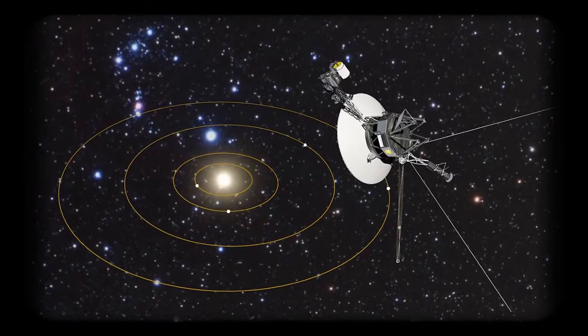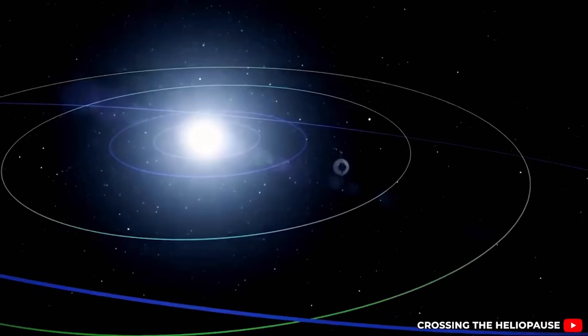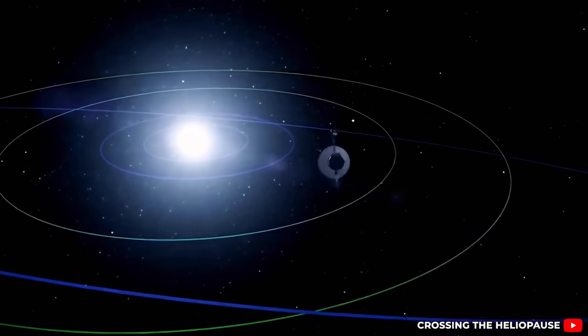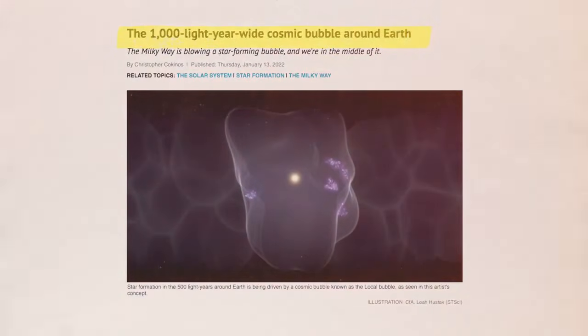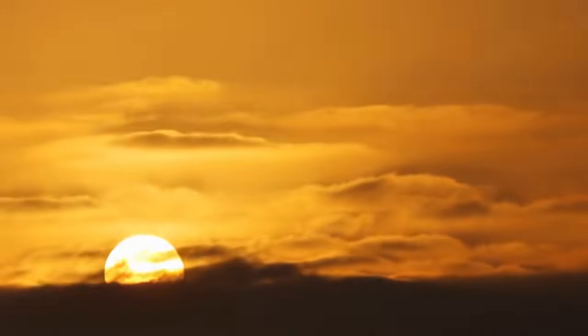Meanwhile, Voyager 2 detected a subtle flow of low-energy particles extending more than 100 million kilometers beyond the heliopause. As Voyager 1 approached the boundary, the outgoing solar wind slowed dramatically, creating an eerie limbo-like state.